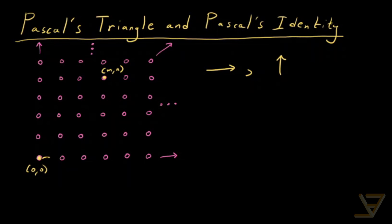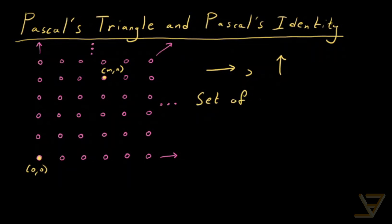For example, we might choose right, right, up, up, right, up, up — so that's one possible path. We're going to call the set of all those increasing paths C(m,n), from (0,0) to (m,n).